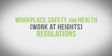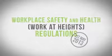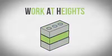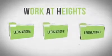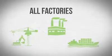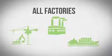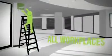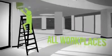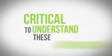The Workplace Safety and Health Work at Heights Regulations, enacted on 1st of May 2013, consolidates work at heights requirements residing in different parts of our legislation for easy reference. The new law initially applies to all factories as defined under the Workplace Safety and Health Act of 2006. On and after 1st of May 2014, the coverage will extend to all workplaces. It is therefore critical to understand these requirements to help ensure safe working at heights in the workplace.